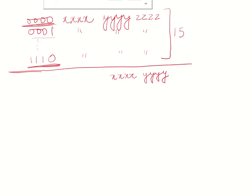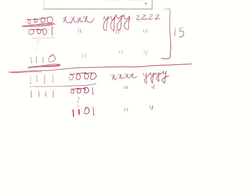For two-address instructions we need an 8-bit opcode. The first 4 bits are 1111 — distinguishing these from three-address instructions — and the next 4 bits range from 0000 to 1101. Going from 0 to 13 gives 14 two-address instructions, satisfying that requirement.